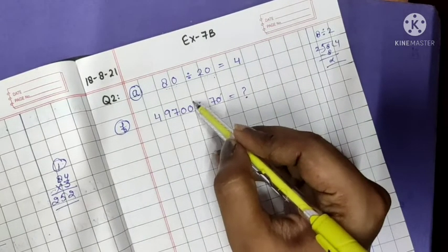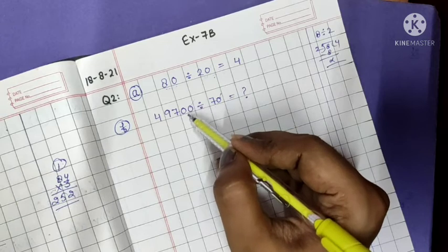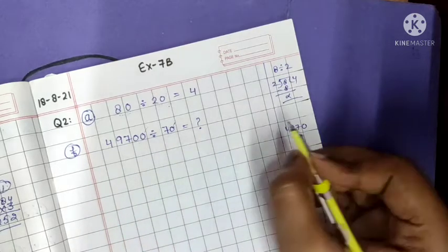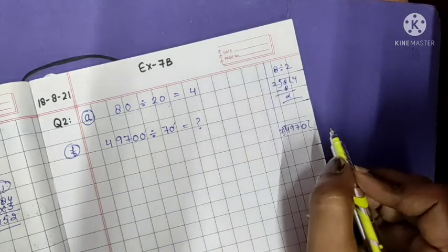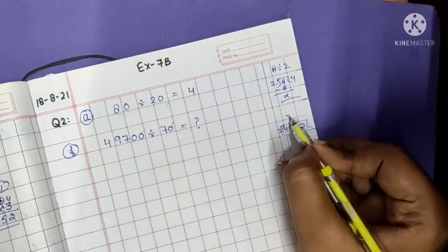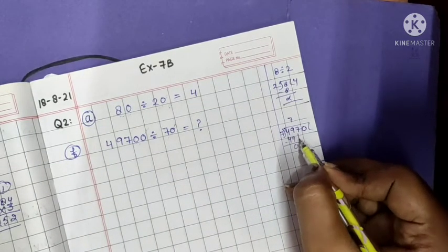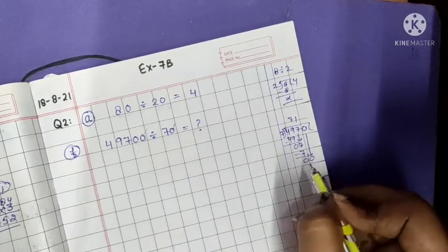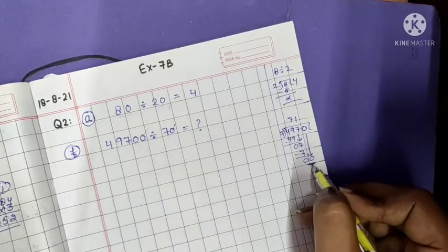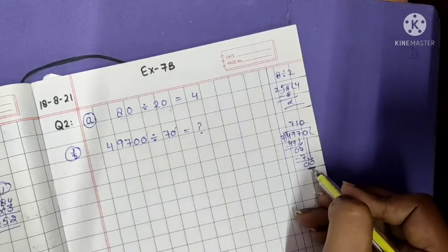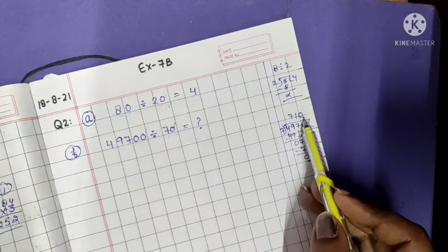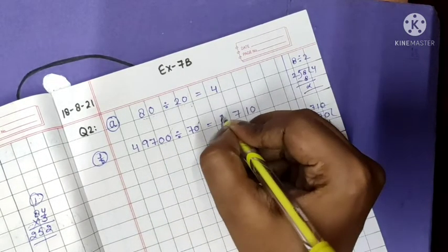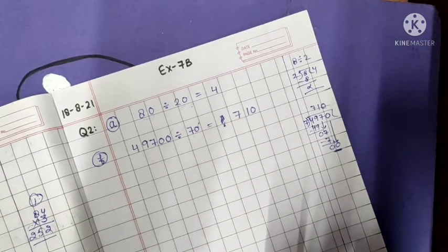So what we can do here? We can remove 10 from here and 10 from here. After that what will the number become? The number will become 4970 divided by 7. The question is simple now. Now do the simple division. 7 sevens are 49, it will become 0. Then 7. 7 ones are 7, it will become 0. And then again 0 is here. So it will go here because the division has been completed. So what will be our answer? Our answer will be 710.